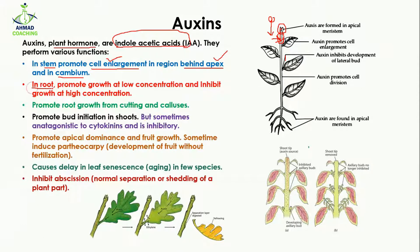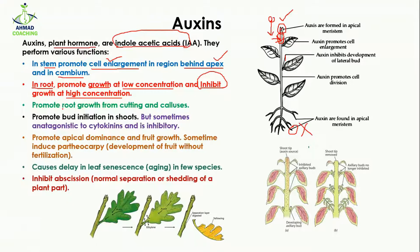In roots, auxins promote growth when present at low concentration, but inhibit growth when present at high concentration. Normally, auxins increase length in the shoot region, while in the root region they inhibit or stop growth.